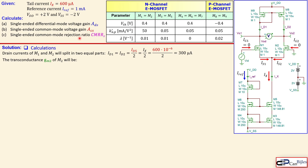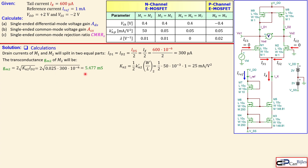The transconductance of M2, gm2, is given by the expression involving k_n2 and ID2. K_n2 is related to k_n prime and the W/L ratio of M2. With W/L = 1 and k_n2 prime = 50 mA/V², we get k_n2 = 25 mA/V². Substituting ID2 = 300 µA into the gm formula gives gm2 = 5.477 mS.